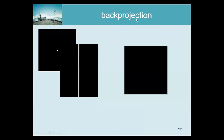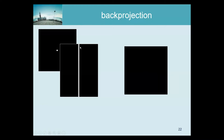Another important ingredient is the back projection. Consider a point source in the center of an image. If we compute the sinogram of that, we will have a straight line. Now we have a single view, and all we know about this view is that there is activity here. That tells us that somewhere along this line there must be activity, but we have no clue where along the line. A poor man's solution is to distribute it uniformly along the line and see what happens.